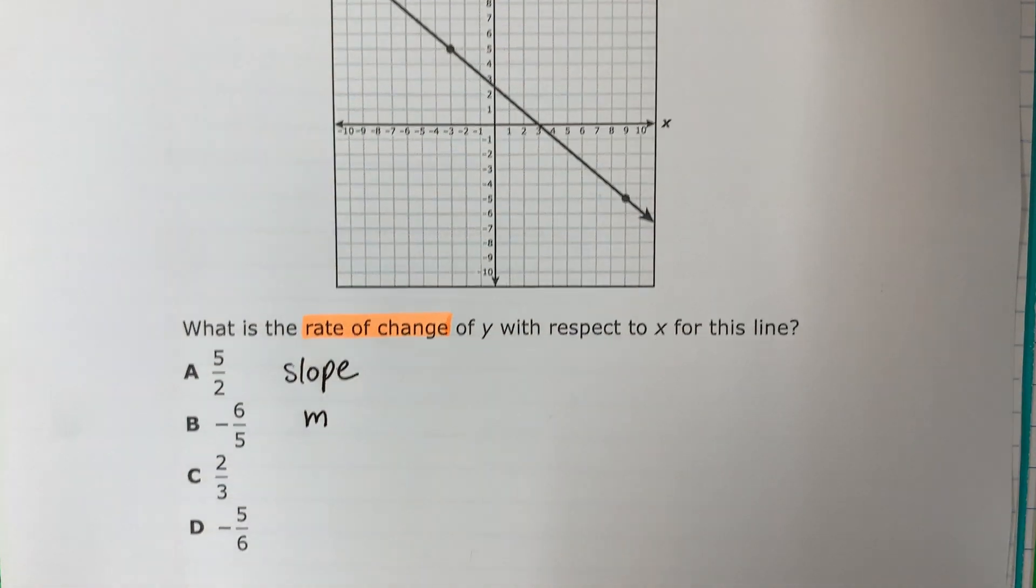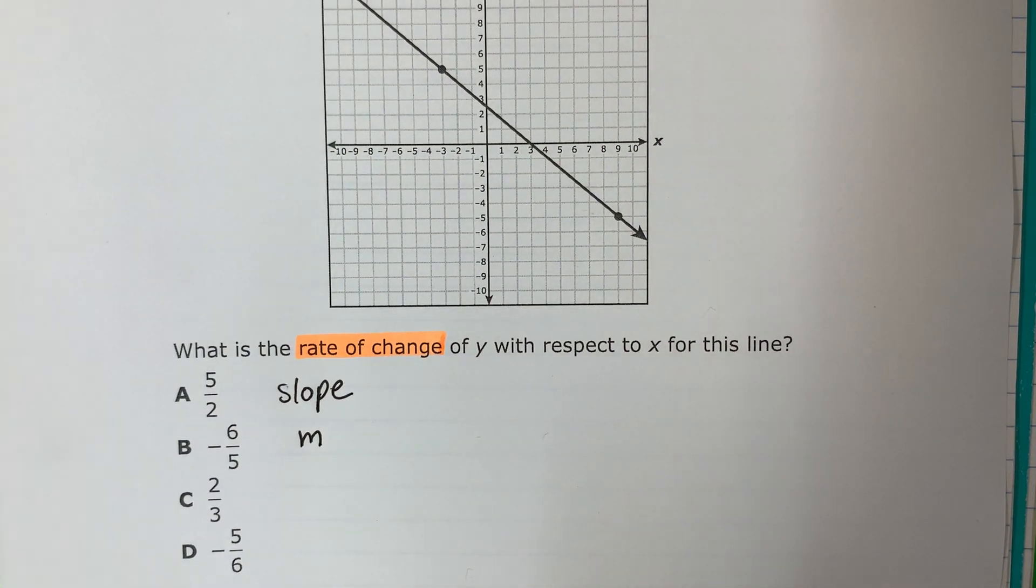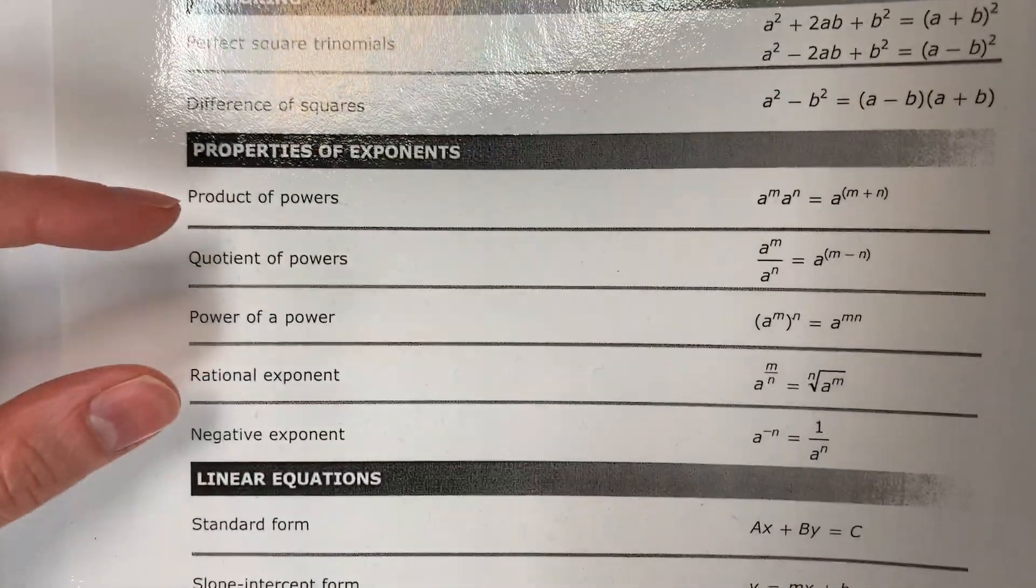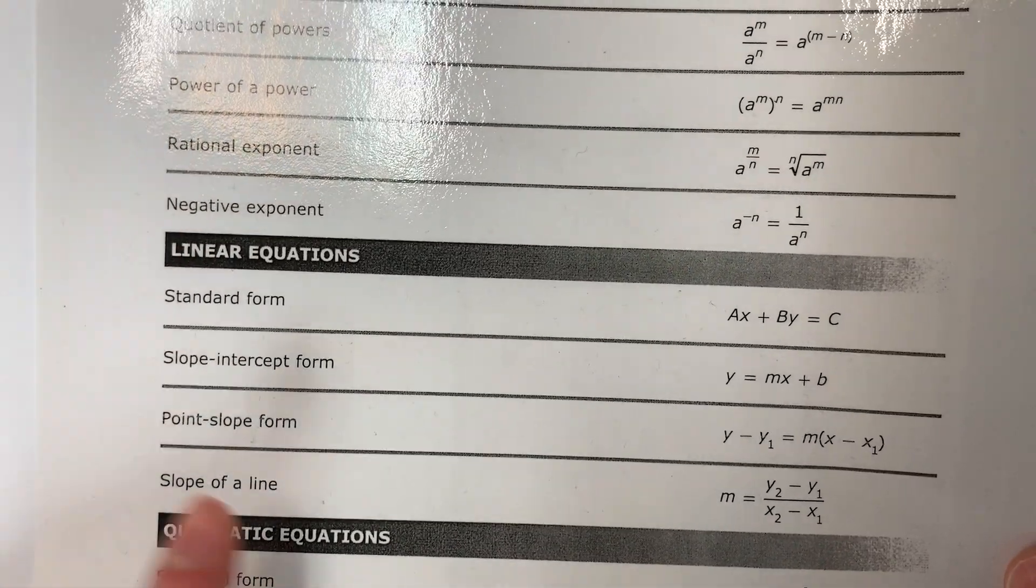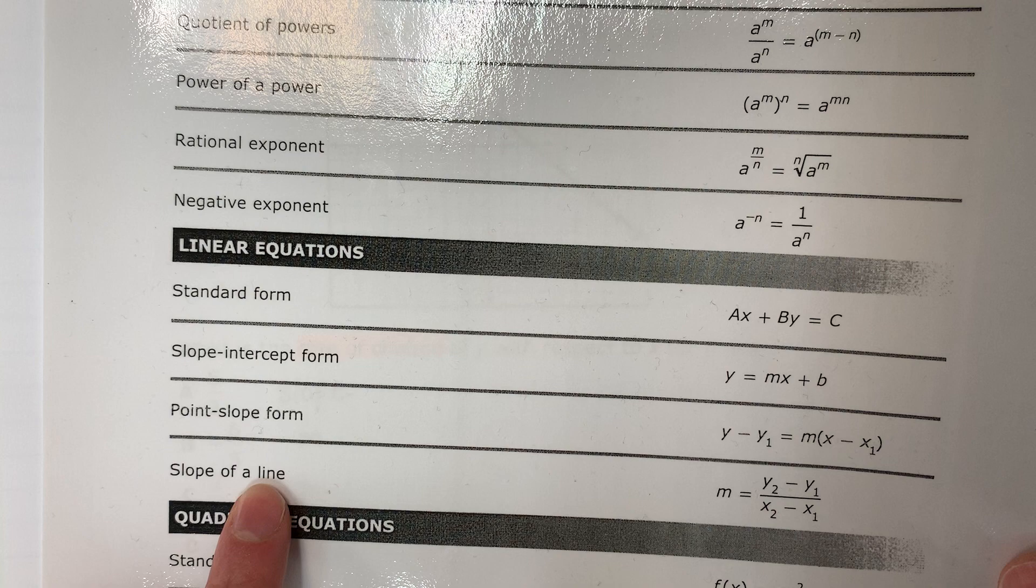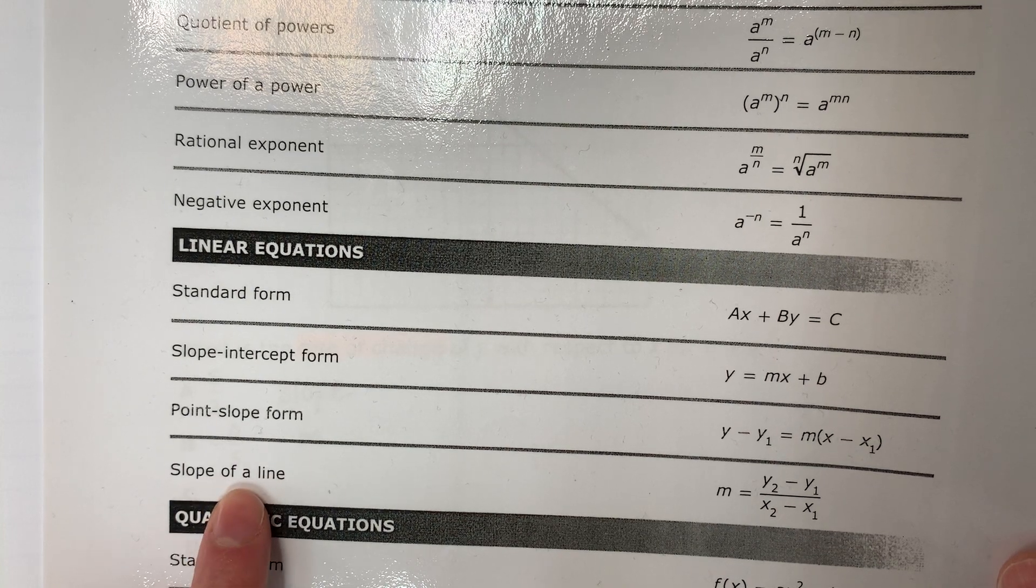And we have a formula for that. So you're going to take out your reference materials chart. You're going to go in the third section. And this is the formula that we will do for the slope of a line.